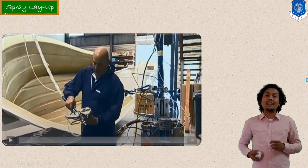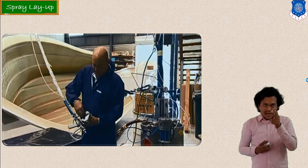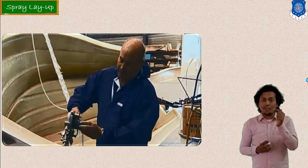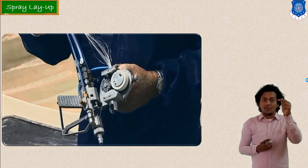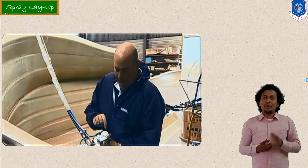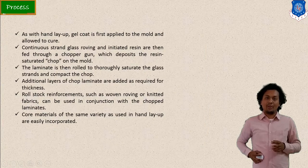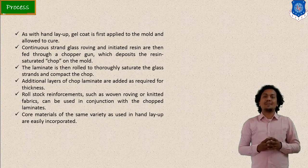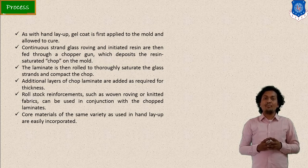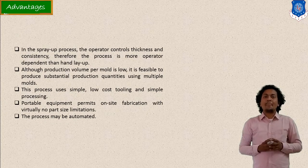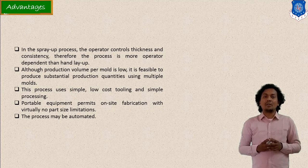From the video, we can easily understand the function of the chopper gun. You can see the chopper gun in operation with the white reinforcement wire fed into it. The function of the gun is to cut this continuous fiber into smaller parts, enabling composite material manufacturing. Here I mentioned all the steps of this spray layup process — the composite material is made with the help of this spray gun, which is quicker than the hand layup.